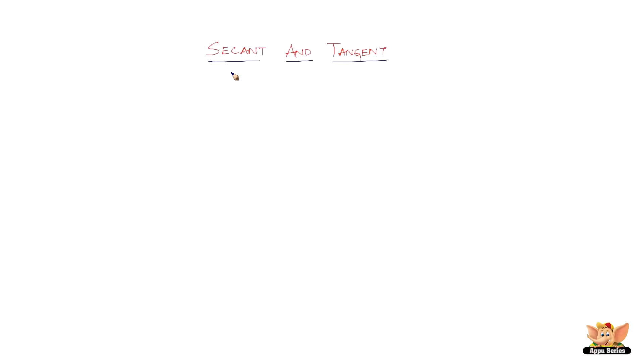In this video, let us learn about the two most basic terms as far as circles are concerned. Those are secant and tangent. Now, what are these two things? What is a secant and what is a tangent?